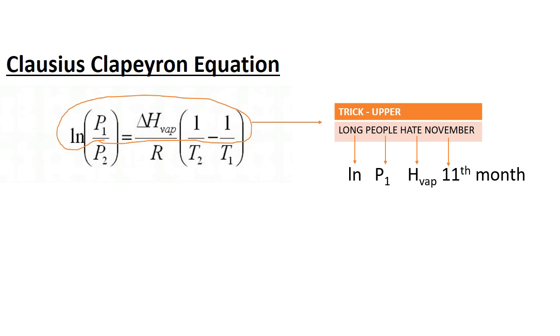So 'Long People Hate November' is the trick to remember the upper portion. Now let's make a trick to remember the lower portion, which has just four letters: P2, R, T2, and T1. The new trick is: Pope Ran To Thailand.